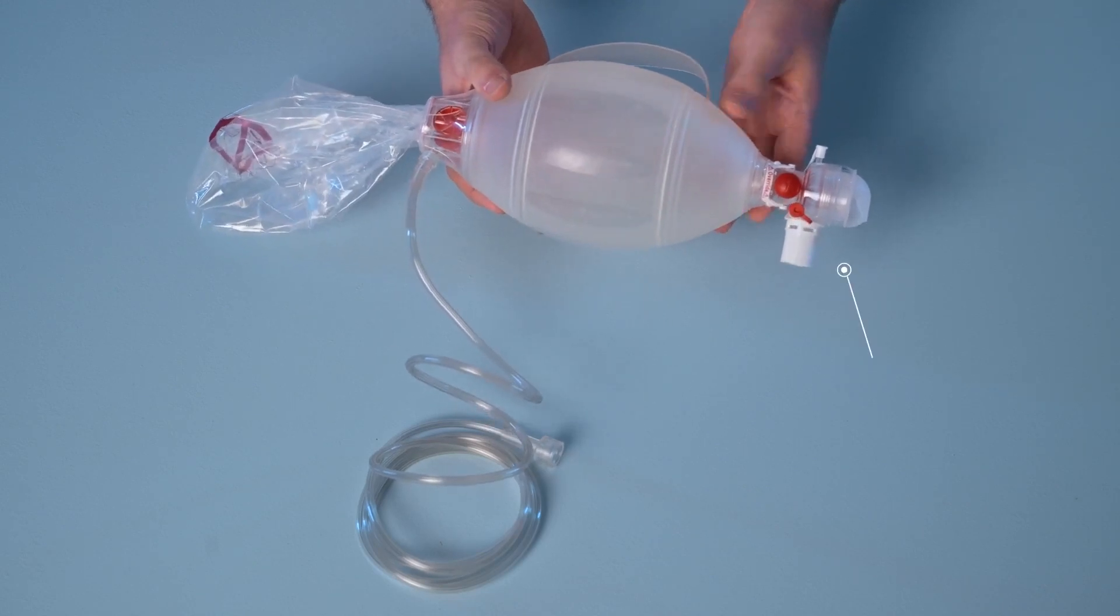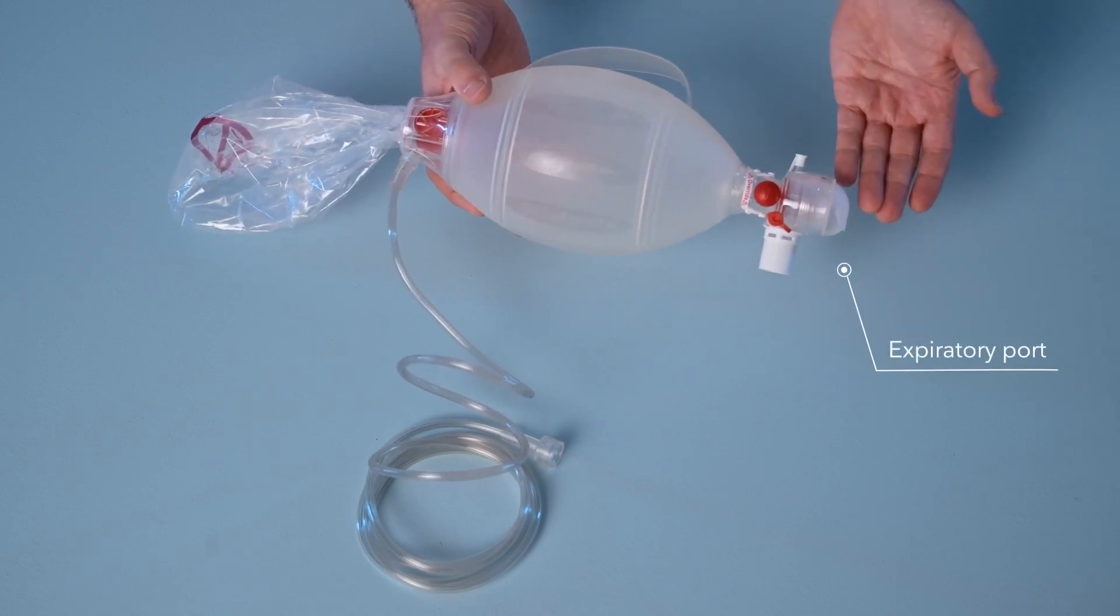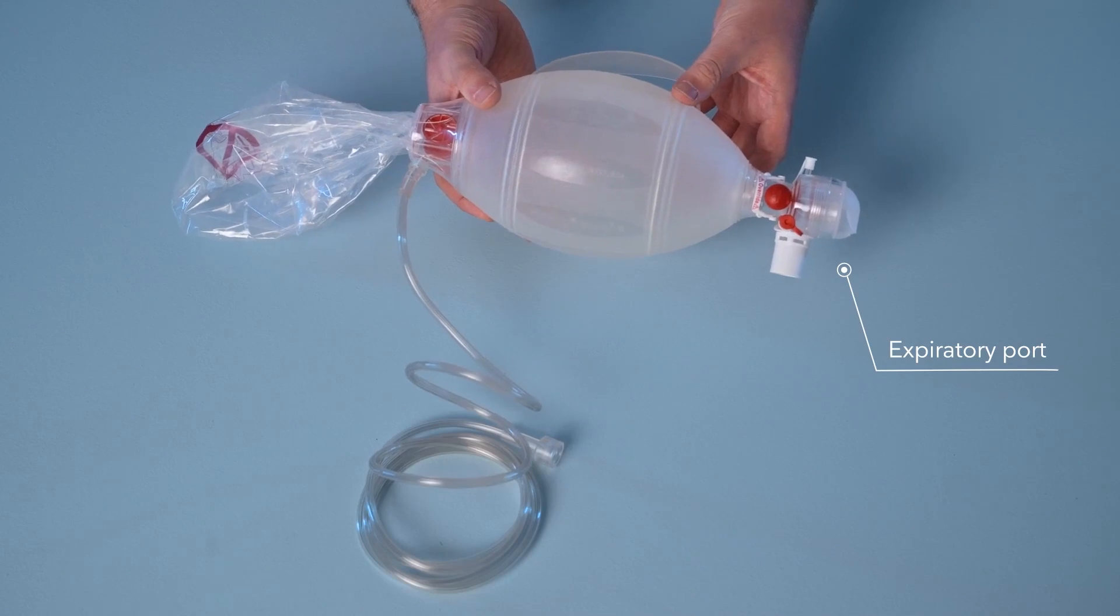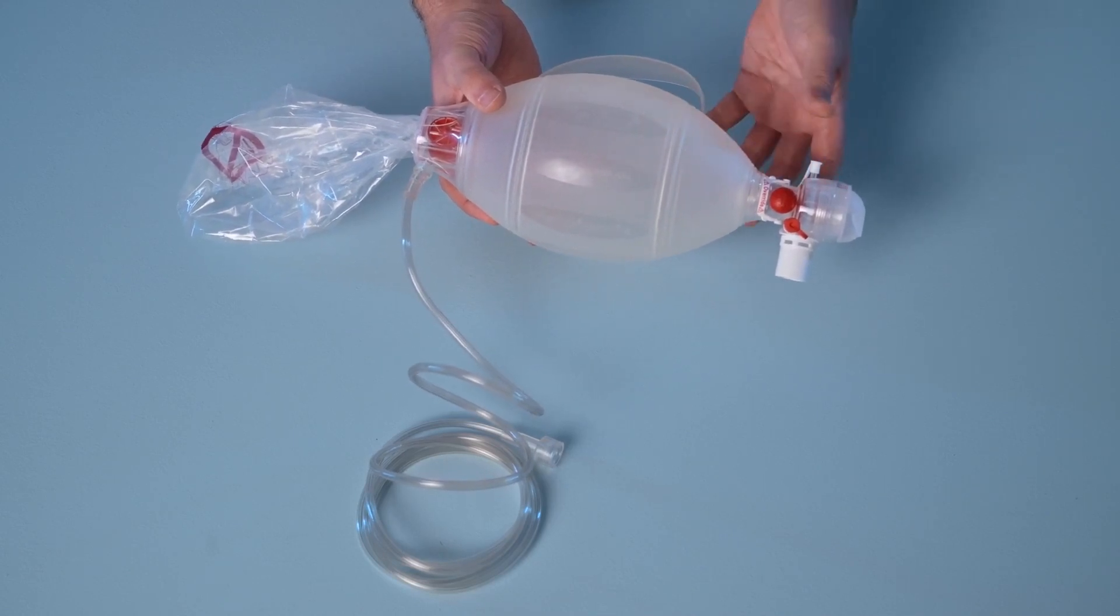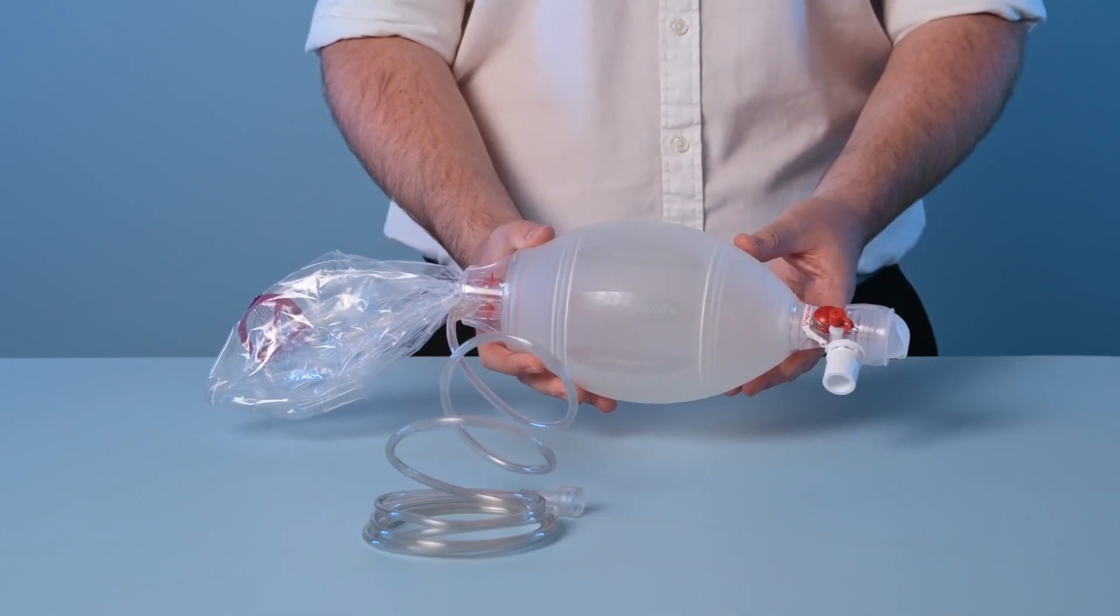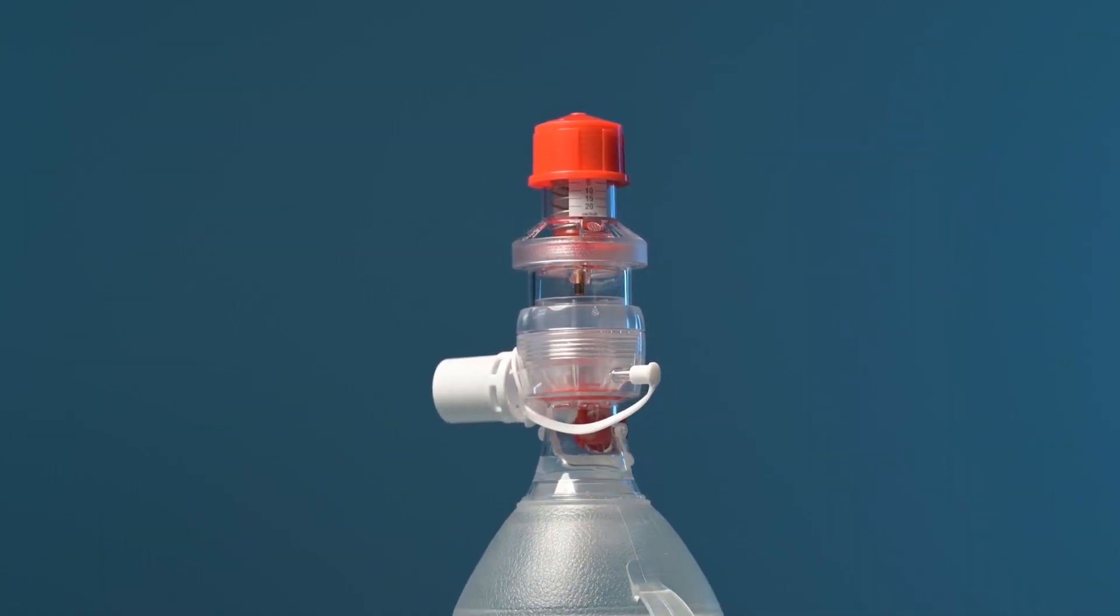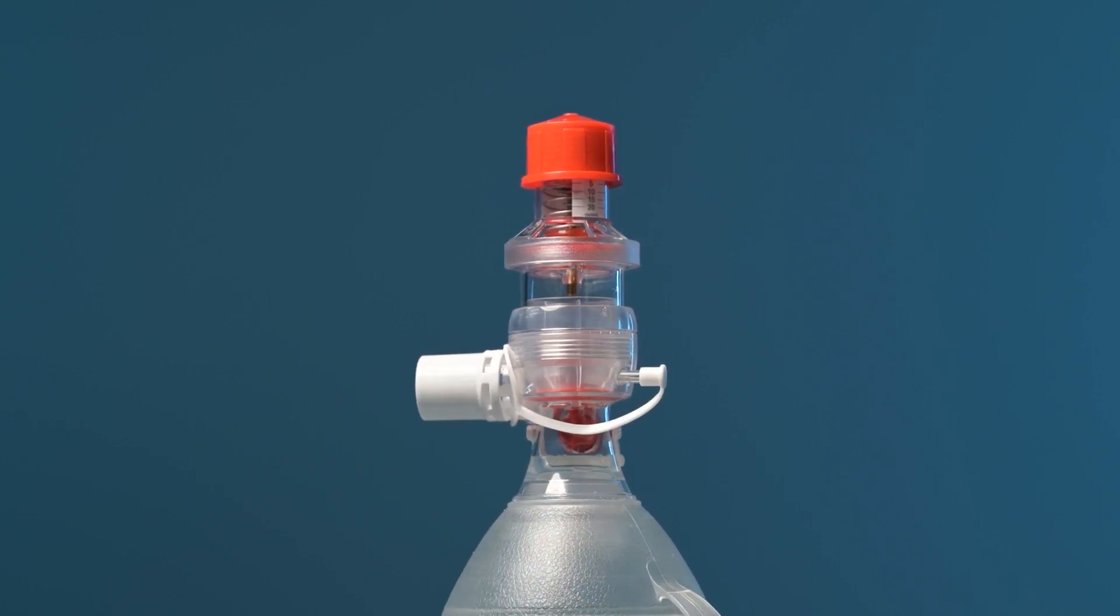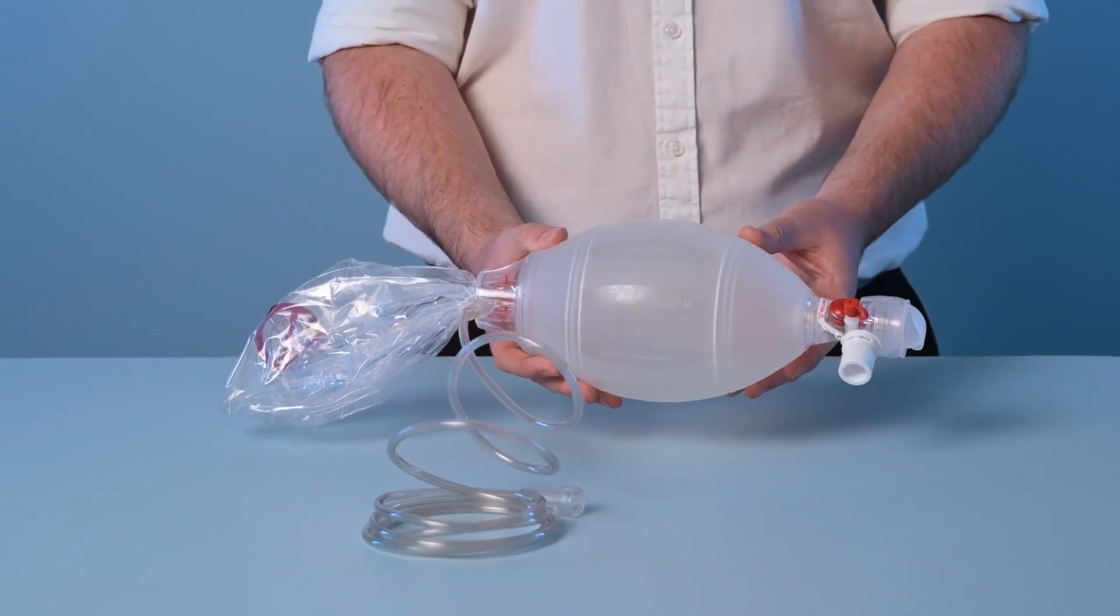Finally looking at the expiratory port, this is where a splash guard is located, and this has the function of directing patient exhalations and fluids away from the user. The splash guard may be replaced with an Ambu PEEP valve if required, and this does not require the use of a separate adapter.